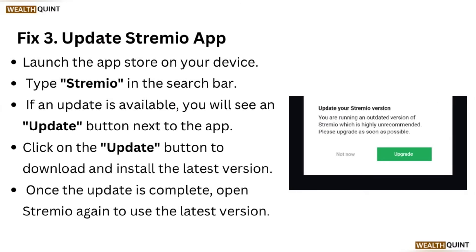Fix 3: Update the Stremio app. Launch the app store on your device and type Stremio in the search bar. If an update is available, you will see an update button next to the app. Click on the update button to download and install the latest version. Once the update is complete, open the Stremio app again to use the latest version.